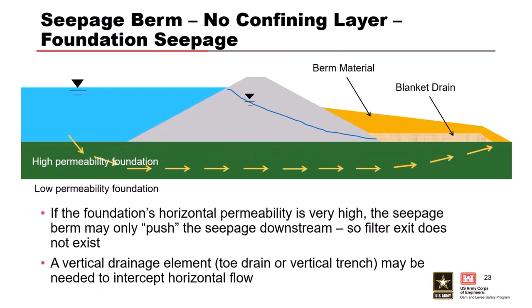For an embankment just sitting on a permeable foundation with high horizontal permeability — even without a confining layer — seepage will try to push out toward the end. You have to be careful: at a certain point extending the berm becomes very long if it's a very high permeability foundation. A vertical element or filter that comes down and intercepts the permeable foundation is probably a better solution, because you're putting that filter protection down there instead of trying to drive it out too far.